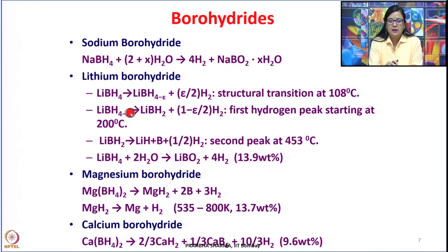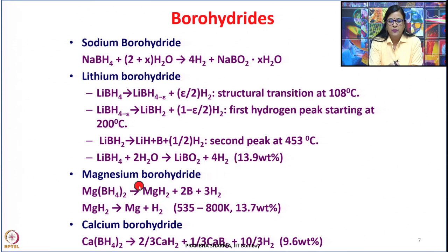Lithium borohydride can give hydrogen at higher temperatures like 200 degrees centigrade or 453 degrees centigrade. The release of hydrogen in steps can finally give 13.9 weight percent, but all decompositions take place at higher temperature. Similarly, magnesium borohydride can give 13.7 weight percent with steps lying between 535 to 800 K, and calcium borohydride can give approximately 9.6 weight percent.